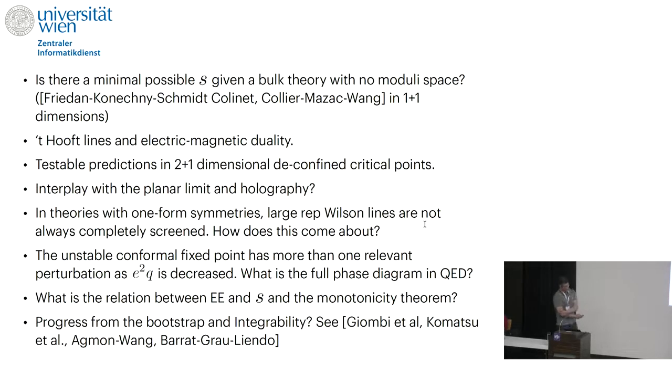Here I'm just going to flesh out some open questions. Of course this begs the question of what happens to electric magnetic duality if Wilson lines don't exist in all representations. One could also try to make more statements about the planar limit holography, one form symmetry. Maybe one interesting question is to understand the relation between the defect entropy and the entanglement entropy of some sort.